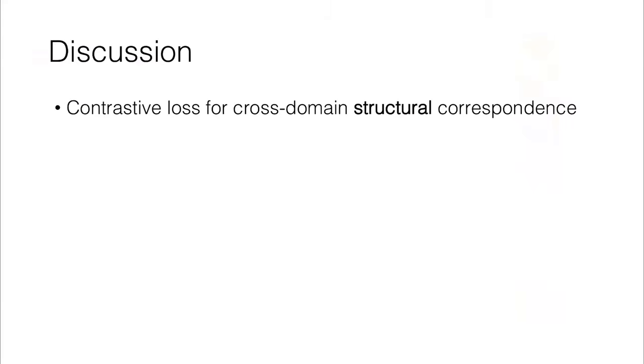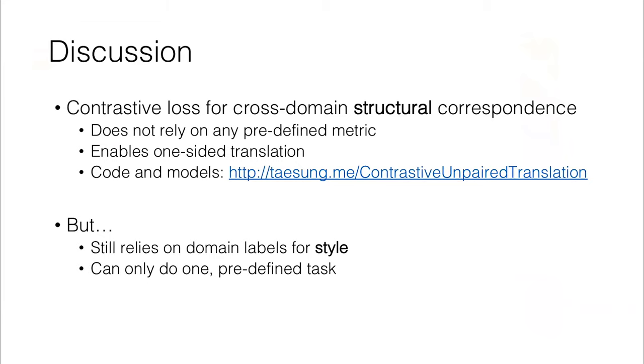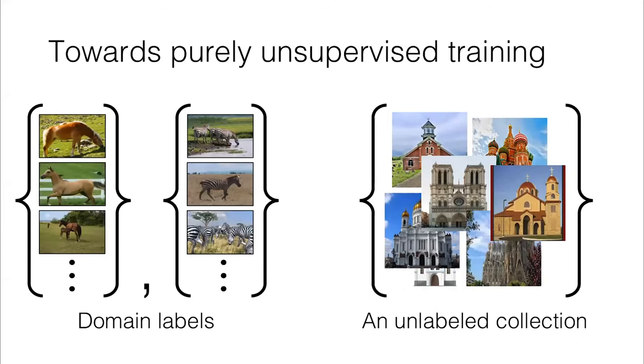Here we've proposed a contrastive loss for the purpose of cross-domain structural correspondence. It doesn't rely on any predefined distance metrics, such as perceptual loss or L1. It enables one-sided translation in the unpaired translation case. You can try our code and models here. But there are some drawbacks. We're still relying on domain labels for style, and we can only do one predefined task. For those single image translation tasks, the results are pretty cool, but it literally takes half an hour or an hour to train, and you can only do that one image.